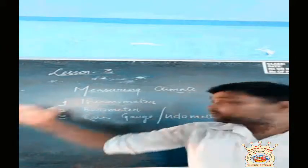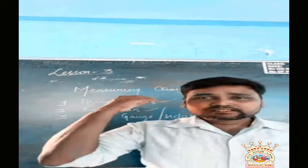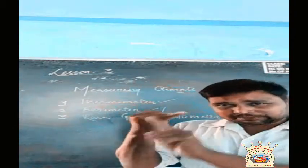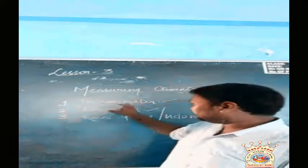Now we are going to see measuring climate — how to measure the climate. There are three instruments through which we measure the climate. The first one is thermometer, the other one is barometer, and the third one is rain gauge. Thermometer measures temperature — whether it is heat or cold, hotness and coldness.